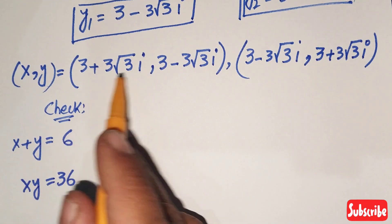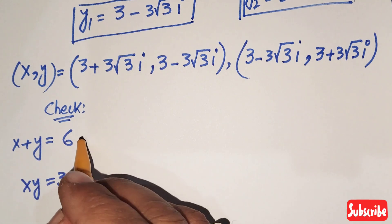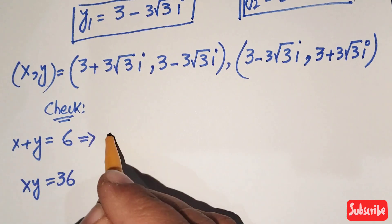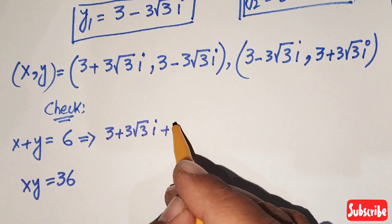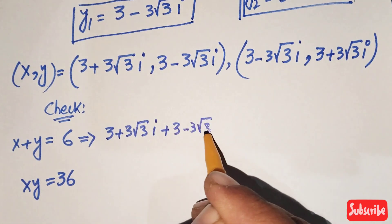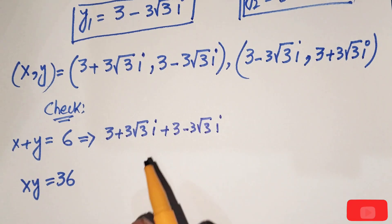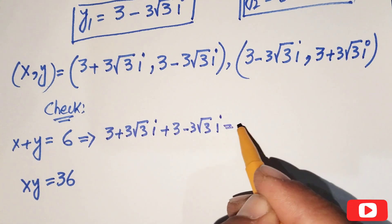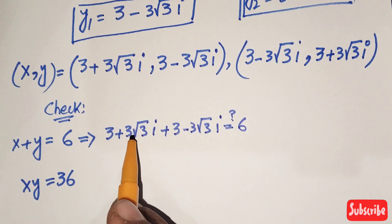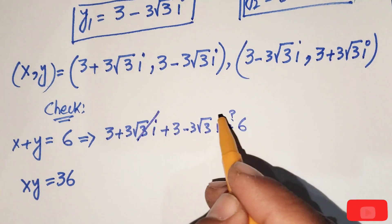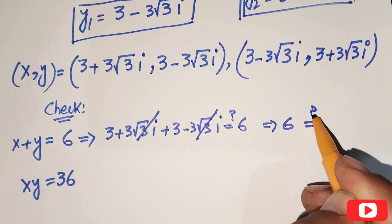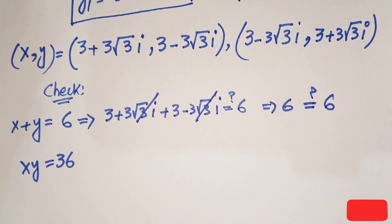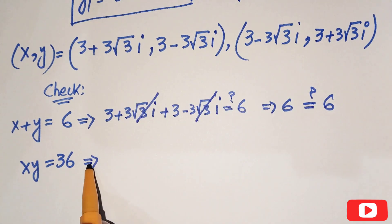Checking the first equation x plus y equals 6: putting x1 and y1, we get (3 plus 3 square root of 3 i) plus (3 minus 3 square root of 3 i). The imaginary terms cancel, giving 3 plus 3 equals 6, so left-hand side equals right-hand side.